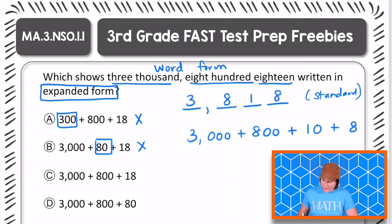Okay, next we have, for C, we have 3,000, that looks good, plus 800, that looks good, plus 18.